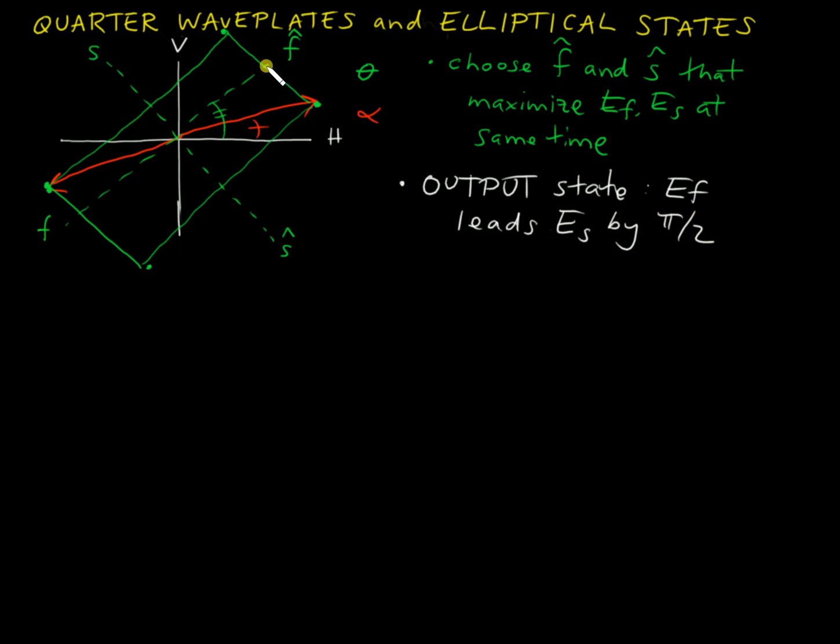So that means I can draw a dot here where E_F maximizes, a dot here where E_S maximizes, and I know that the path of the ellipse that's going to be the state goes like this. At some point it's going to be pointing up to the top box here where the F is, later it's going to be pointing here, and this is the path.